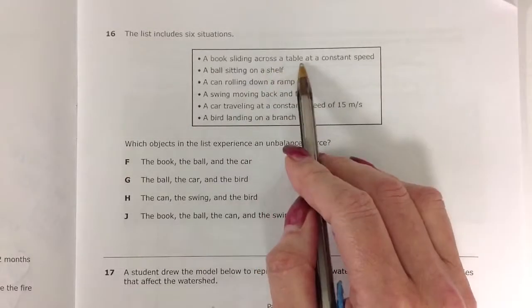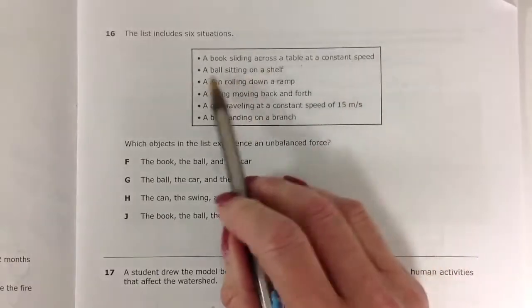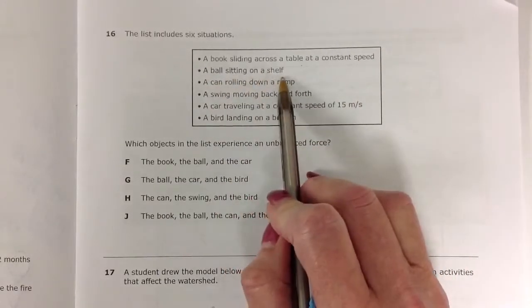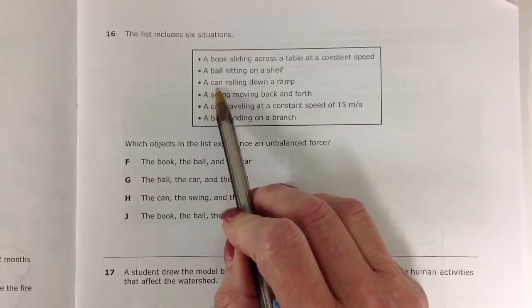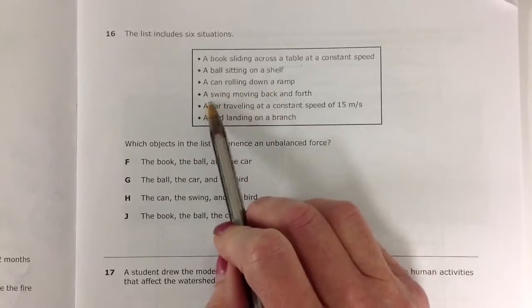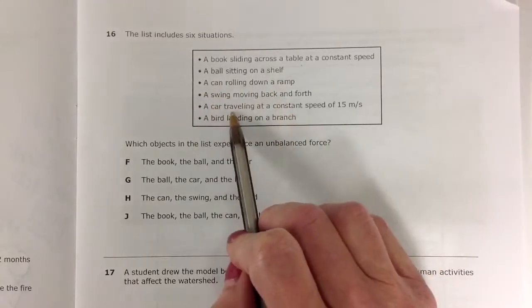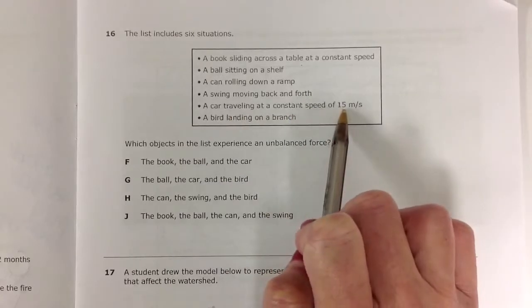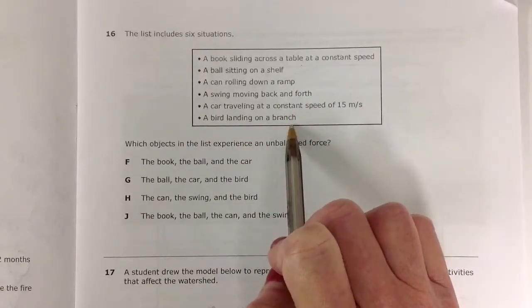A book sliding across a table at constant speed, a ball sitting on a shelf, a can rolling down a ramp, a swing moving back and forth, a car traveling at constant speed of 15 meters per second, a bird landing on a branch.